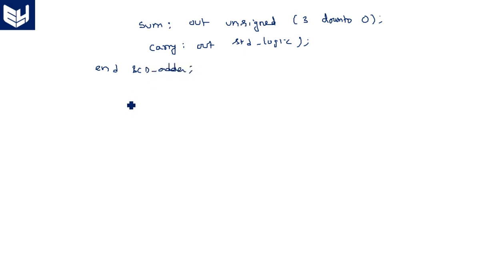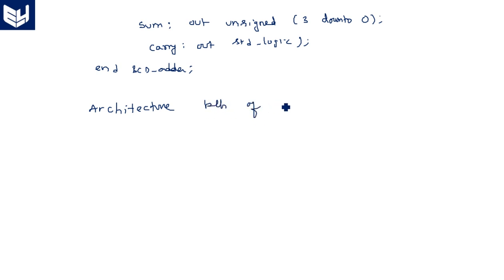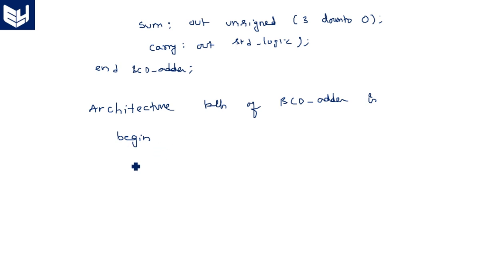Now coming to the main part of this VHDL code: 'architecture behavioral of BCD_adder is begin'. Here we are writing the code in the behavioral model.